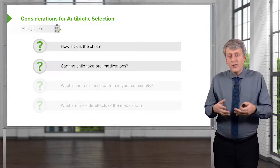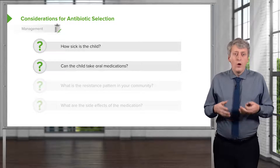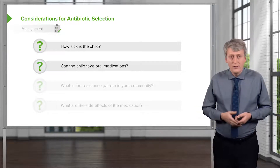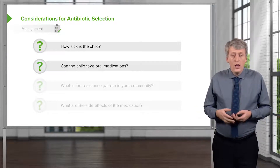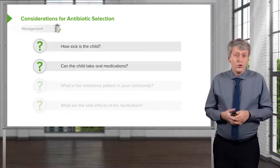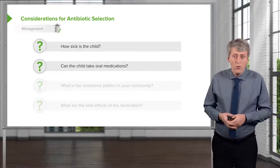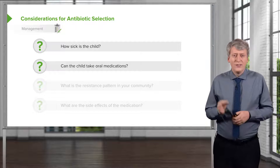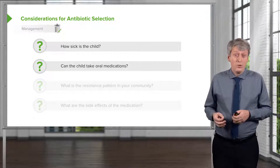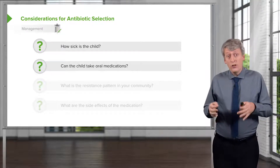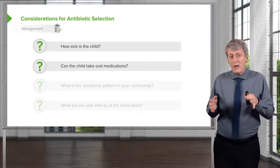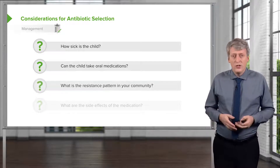If we're choosing an antibiotic, we want to know: is this child likely to take oral medications? Amoxicillin, for example, is a good first choice for a pneumonia. Oral amoxicillin is delicious. Clindamycin tastes terrible. And if you're a two-year-old who's being forced to take their medicine, that may weigh into your decision.